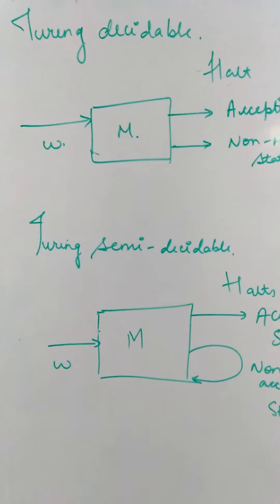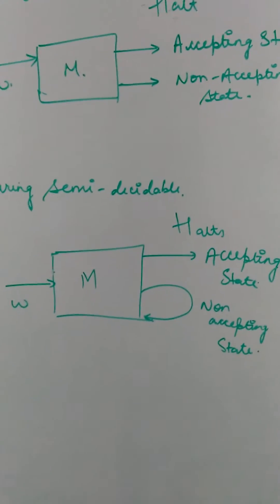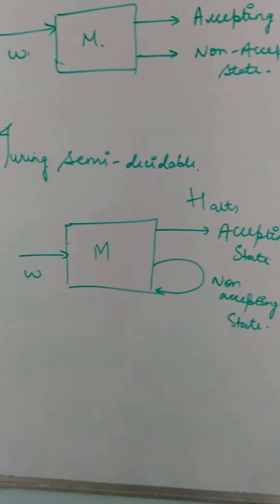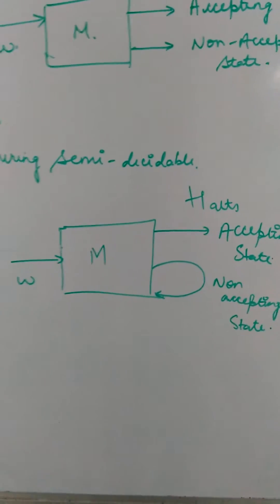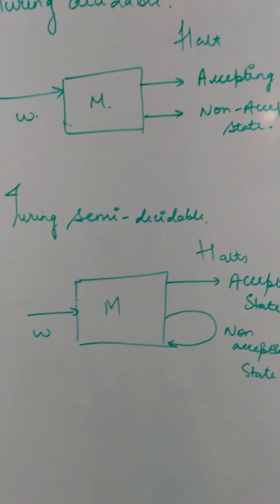But if the Turing machine only halts at an accepting state and it will loop for every other state, then those languages are called Turing Semi-decidable languages. So this is the main difference between both these.